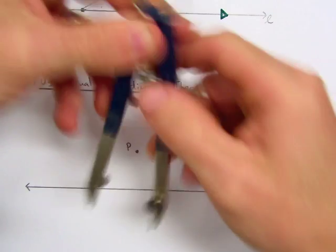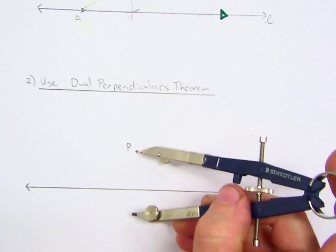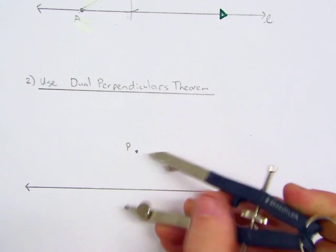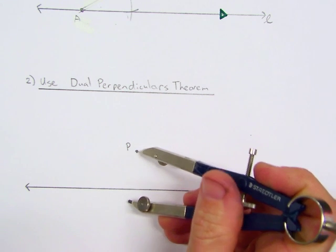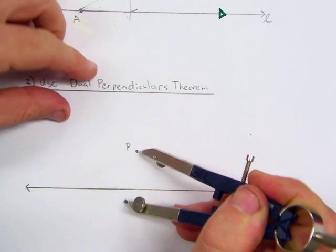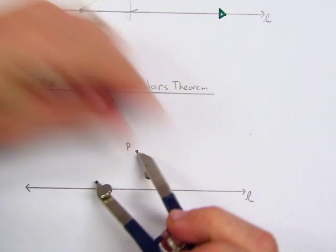We covered this in another video. We open the compass up so that it will, from point P, intersect line L in two places.